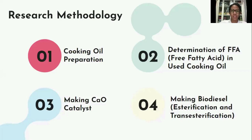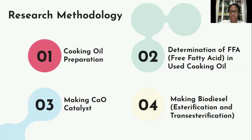This is the research methodology. The first stage is cooking oil preparation. The second stage is the determination of FFA or free fatty acid in used cooking oil. The third stage is making CaO catalyst. And the fourth stage is making biodiesel via esterification and transesterification.